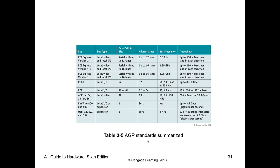Looking at data pathways and bandwidth: AGP ranges from 266 megabytes per second up to 2.1 gigabytes per second. PCI Express version 2 offers up to 500 megabytes per lane, with up to 32 lanes — realistically 16 lanes — making it significantly faster than AGP. Note that PCI Express version 3 also exists but wasn't listed.